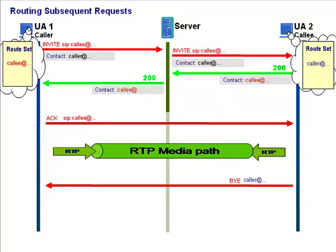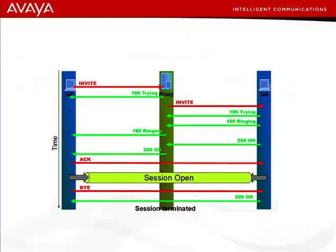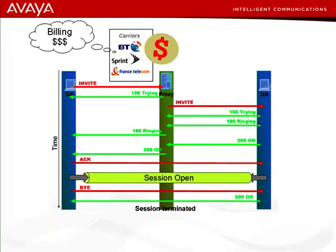Is this direct routing of subsequent requests a good thing? Do you like the fact that after setting up the call, the server doesn't get any subsequent requests? The answer depends on who you are and what you want. For some people the mechanism works just fine — if all you want is a basic call, there's no problem with subsequent requests going direct. But what if you're a telecom service provider who charges for calls with per-second billing and itemized calling? If they don't get the BYE at the end of the call, how can they work out how much to charge?